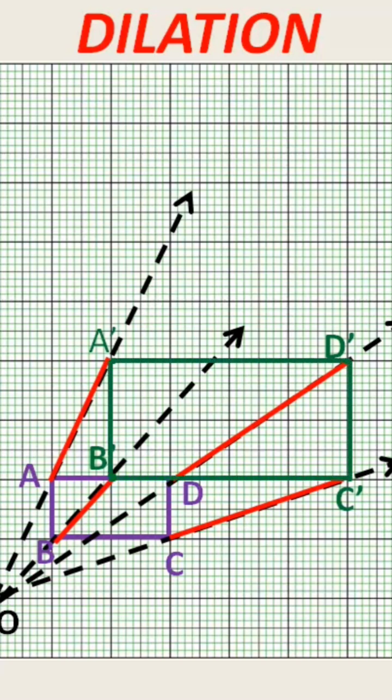Now join all these vertices to get a new rectangle which is the enlarged size of ABCD. Here OA' by OA equals 2, so we say that the scale factor of this figure is 2. This rectangle is 2 times the original rectangle.